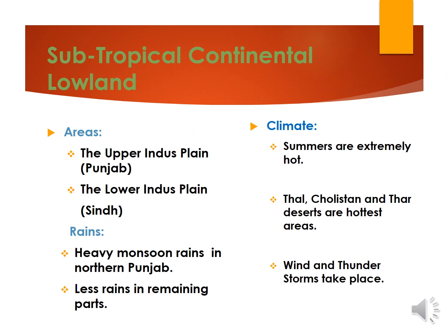Areas of Subtropical Continental Lowland include the Upper Indus Plain, that is the province of Punjab, and the Lower Indus Plain, that is the province of Sindh. Heavy monsoon rains occur in northern Punjab, but there are less rains in the remaining parts of this climatic region. Summers are extremely hot in this region. Thal, Cholistan, and Thar deserts are the hottest areas. Wind and thunderstorms also take place.